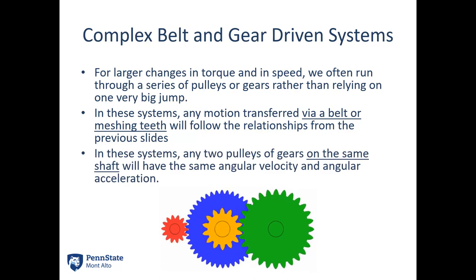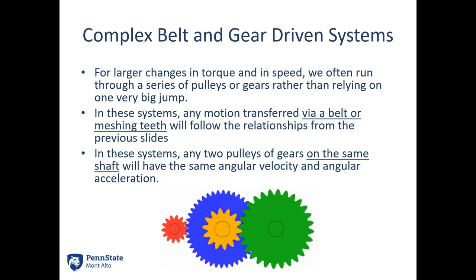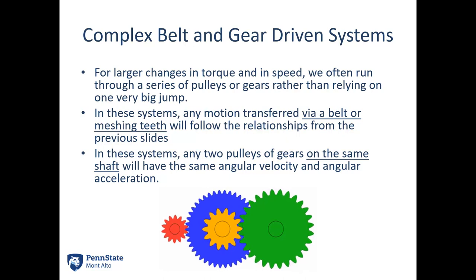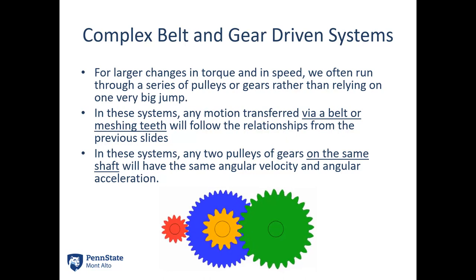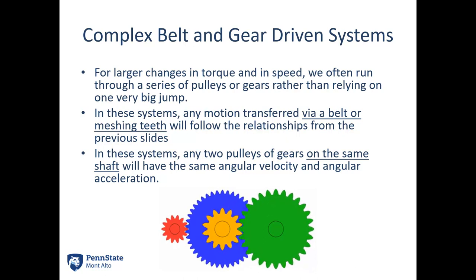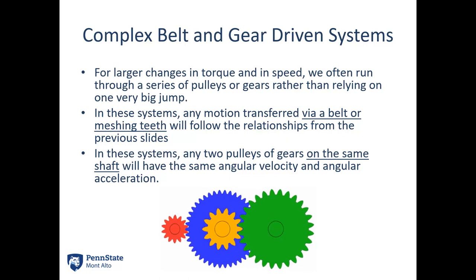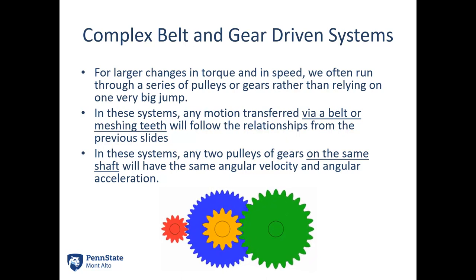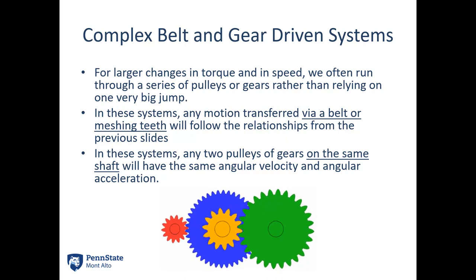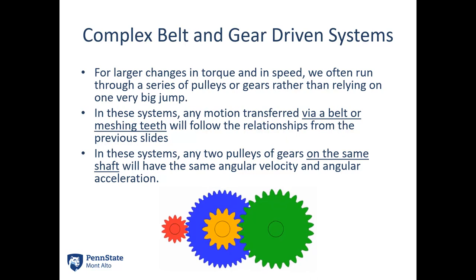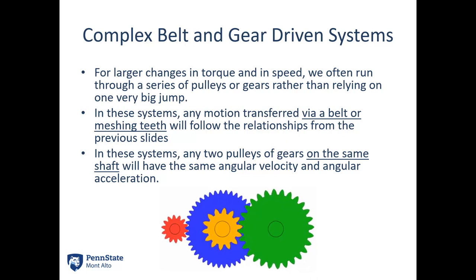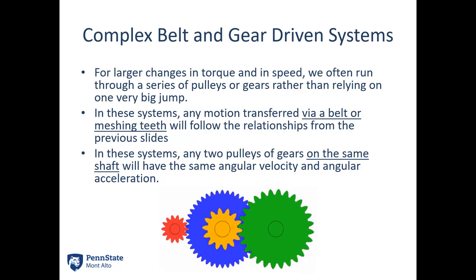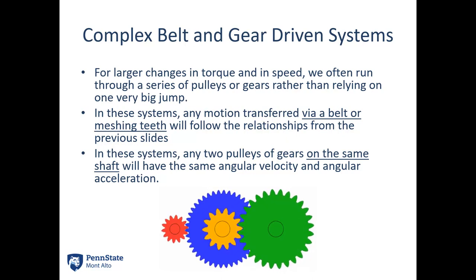In these systems we often have two pulleys or gears on the same shaft. When components share a shaft, they have the same angular velocity and the same angular acceleration. Here that's the blue and yellow gears — their rotation rates are identical. So working through the full system: red to blue gives r1·omega1 = -r2·omega2; blue and yellow share omega; then yellow to green gives r3·omega3 = -r4·omega4. The same approach applies to pulley driven systems, except without the negative sign since pulleys maintain the same rotation direction.